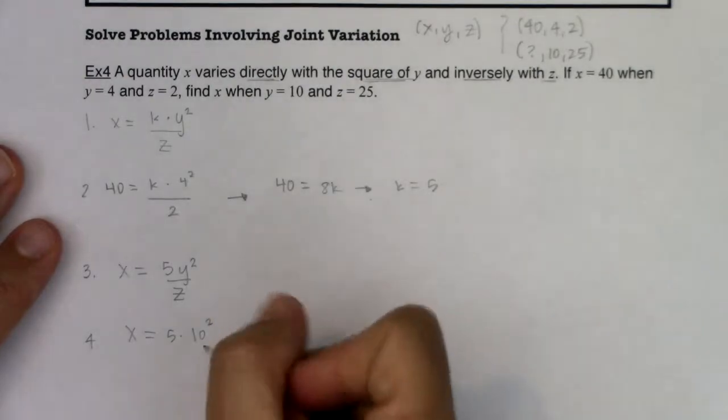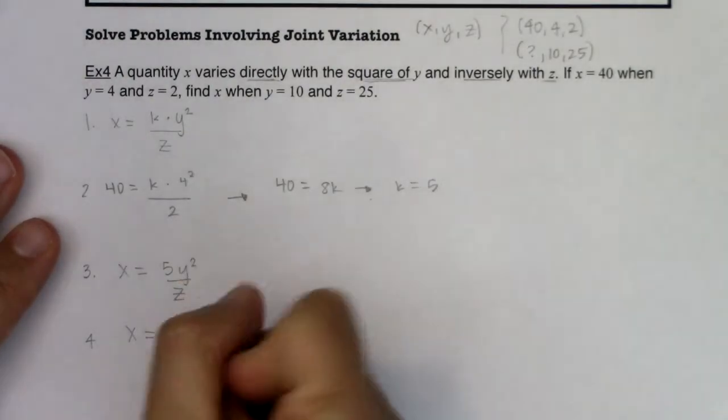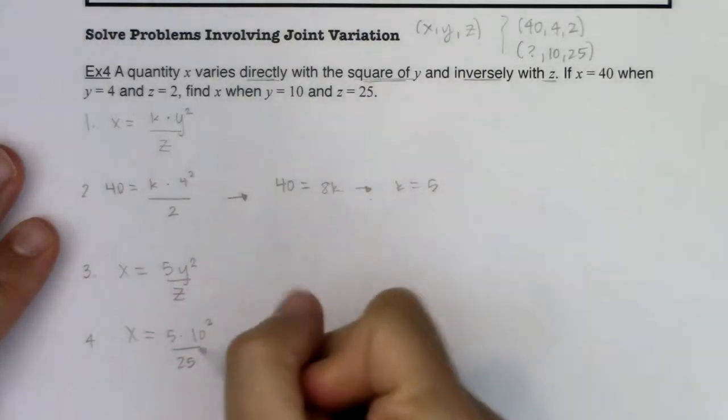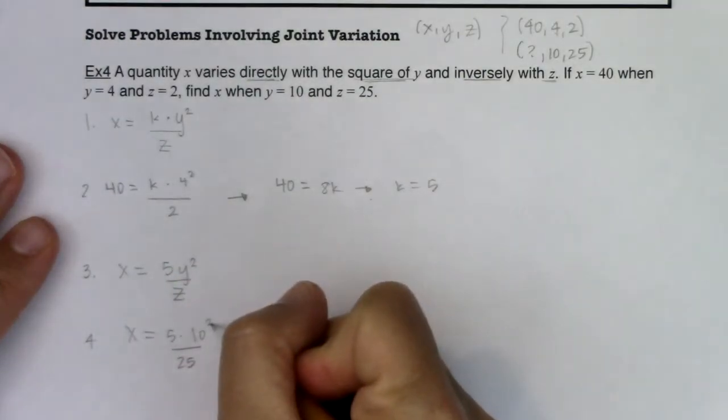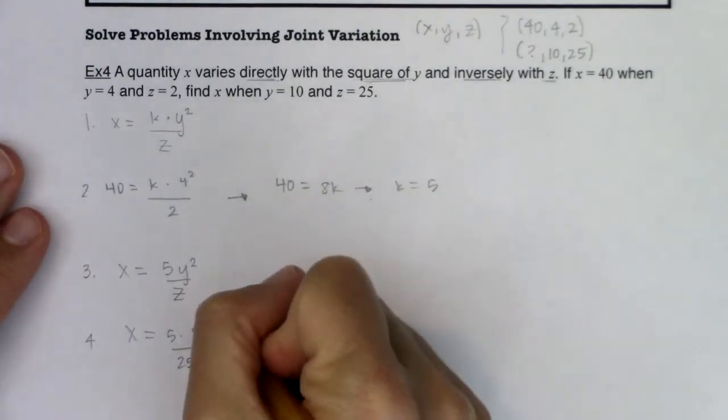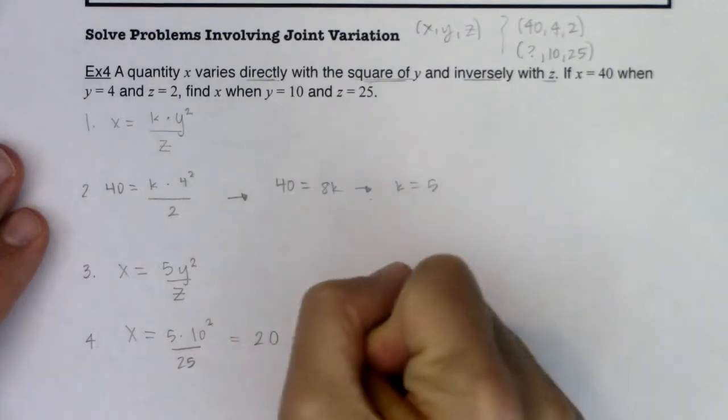Let me scooch that up. Looks like we can't quite see it anymore. Alright, so we had 5Y squared divided by Z. So I'm going to divide by 25. So let's see, 10 squared is 100, 100 divided by 25 is 4, and 4 times 5 is 20. So that tells me X is equal to 20.